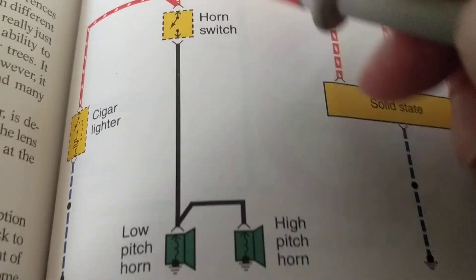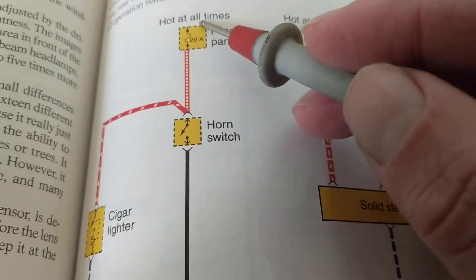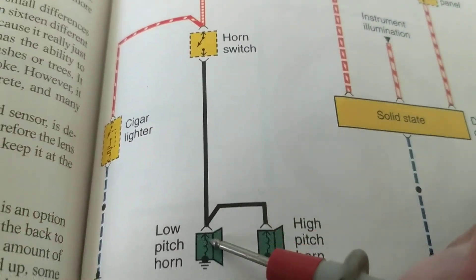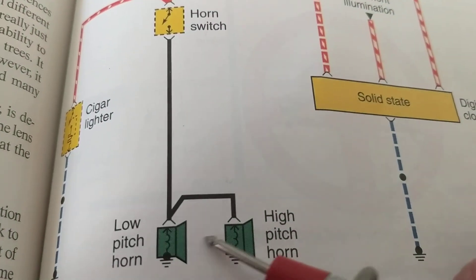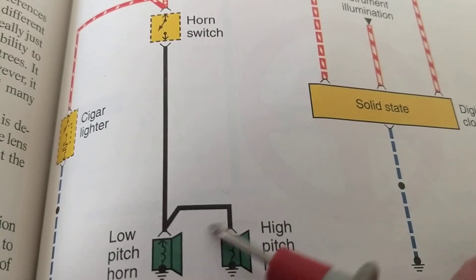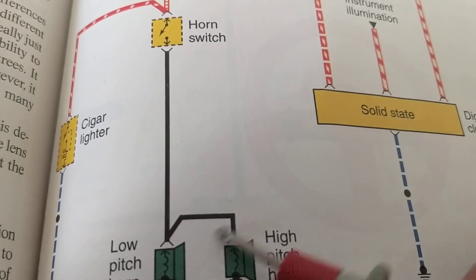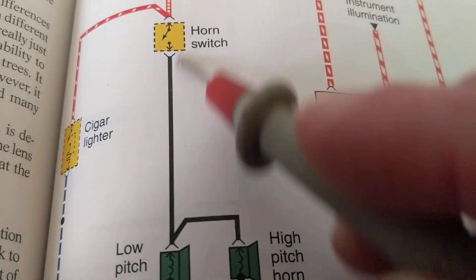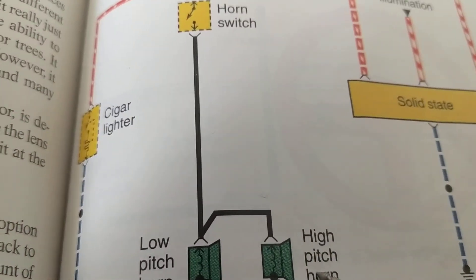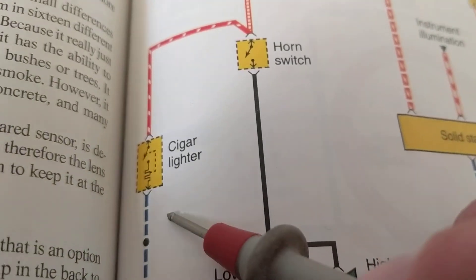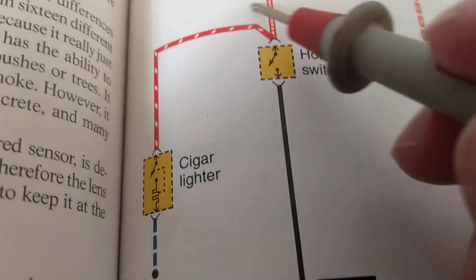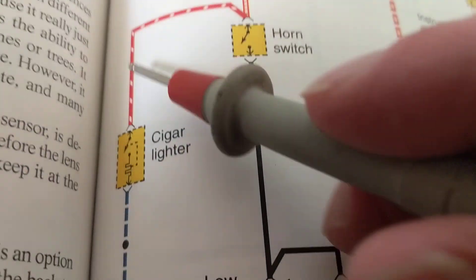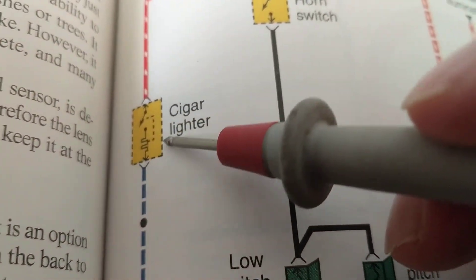Battery voltage is always there, and you can press the horns to sound. The cigarette lighter is the same thing — you don't have to have anything in the ignition key socket.